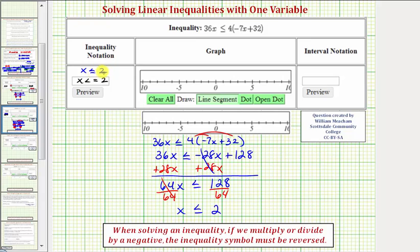because of the equal part two is included, so to show two is in the interval, we want to plot a closed point or a closed dot using our dot tool. So click on the dot tool, click on positive two, and then because x is less than or equal to positive two, we use the line segment tool and graph to the left.